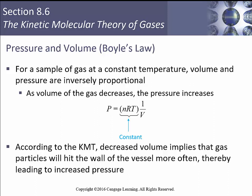Let's look at Boyle's law — pressure and volume. For a sample at constant temperature, volume and pressure are inversely proportional. As the volume of the gas decreases, the pressure increases. Pressure is related to 1 over volume, with NRT as a constant. According to kinetic molecular theory, decreased volume means gas particles hit the wall of the vessel more often, therefore leading to an increase in pressure.